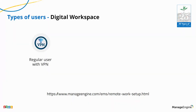One is a regular user with a VPN connection — meaning you have your applications on-prem or in your data centers, and you provide VPN to remote users who connect to those applications and work from home or anywhere they want. That's user number one.